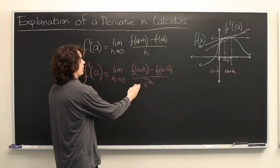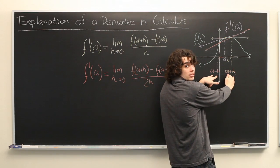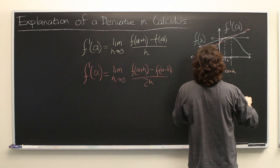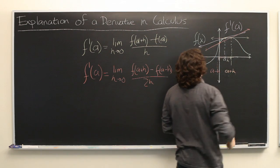And what this limit says is as h gets closer and closer to zero, and both of these points get closer and closer to a, this secant line will approach the tangent line that we're interested in.